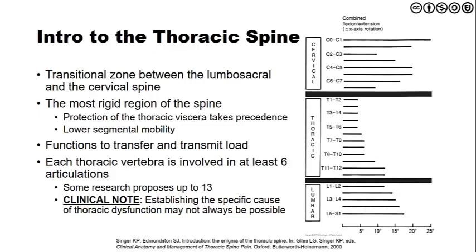Each of the thoracic vertebra is involved in at least six articulations — a change from what we see in the cervical and lumbar spine. Because of that, there are more areas that are prone to potentially having some concordant sign or some pain provocation. We see six articulations because we also have the costo-vertebral joint and the costo-transverse joint, which articulate with the head of the rib and the costal angle articulating with the transverse process. Some research proposes there could be as many as 13, though these are theoretical. The clinical note here is that establishing a specific cause of thoracic dysfunction may not always be possible because there are so many different areas that could be contributing or overlapping in terms of symptom provocation.